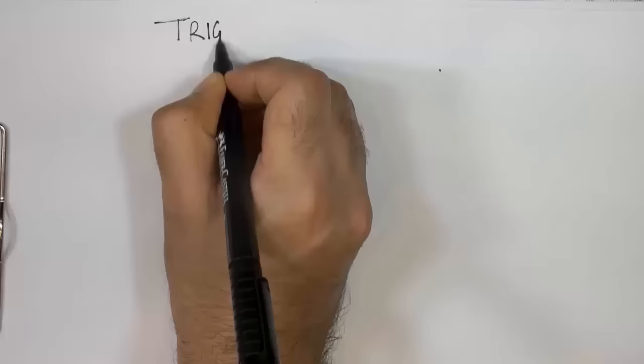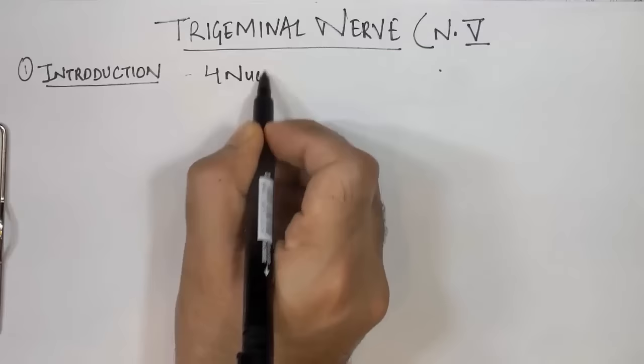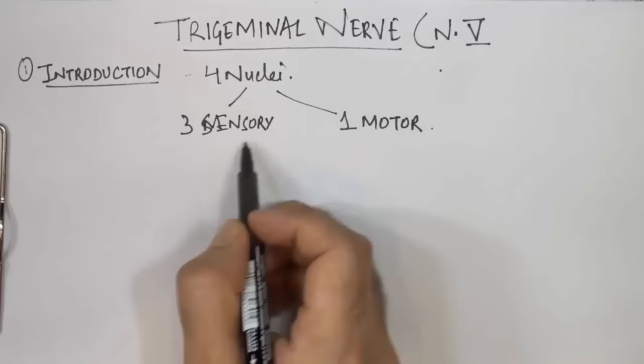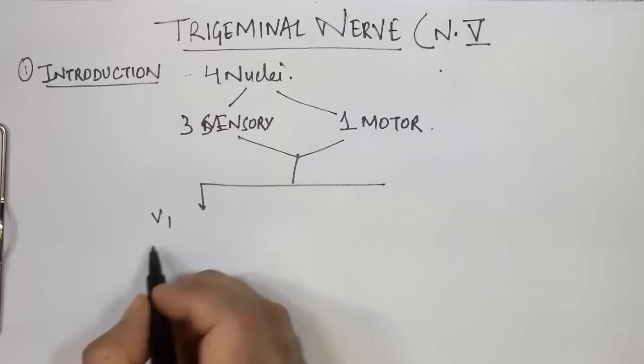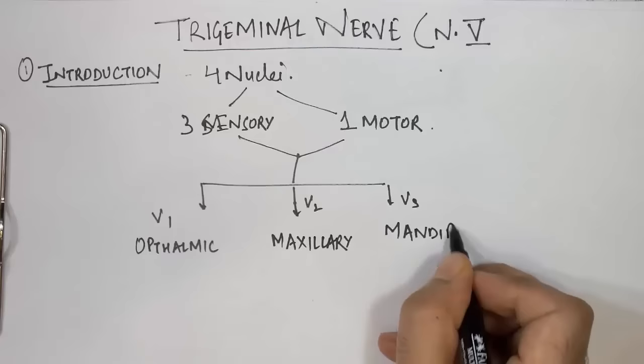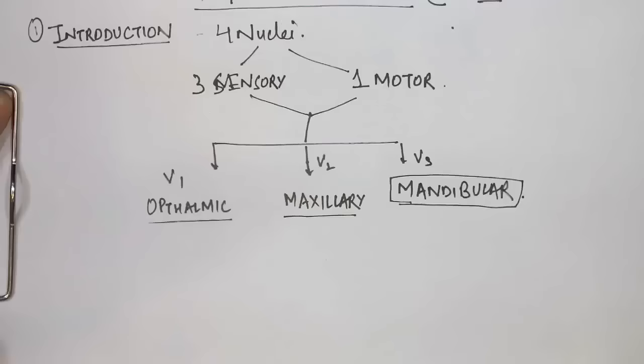In this video we will study the trigeminal nerve, or cranial nerve five — the largest cranial nerve. It arises from four nuclei: three sensory nuclei and one motor nucleus. These four nuclei combine and give rise to three branches: V1 the ophthalmic, V2 the maxillary, and V3 the mandibular. The ophthalmic and maxillary are purely sensory, and the mandibular branch is mixed, having both sensory and motor components.